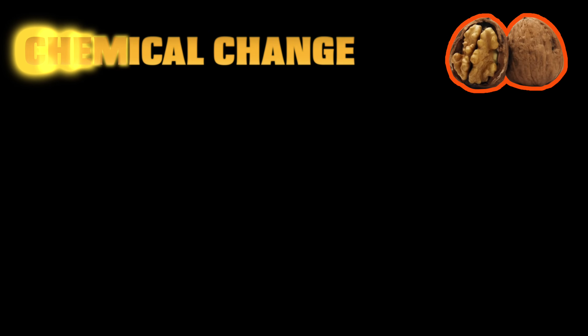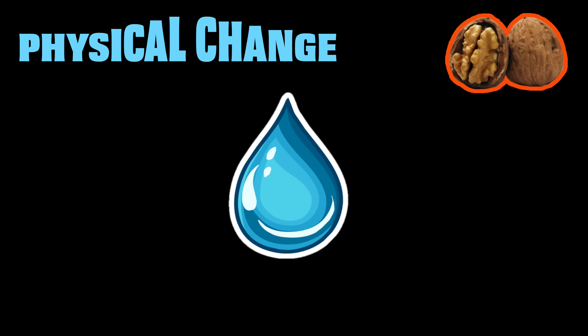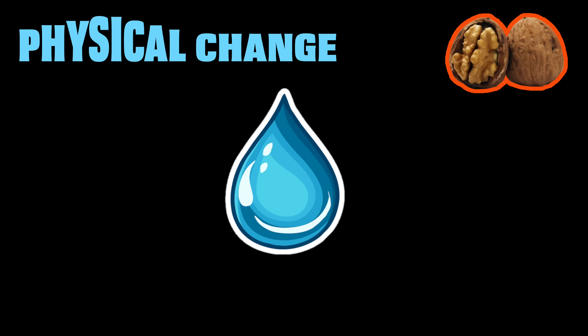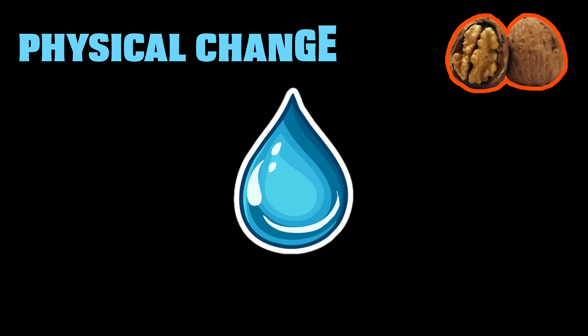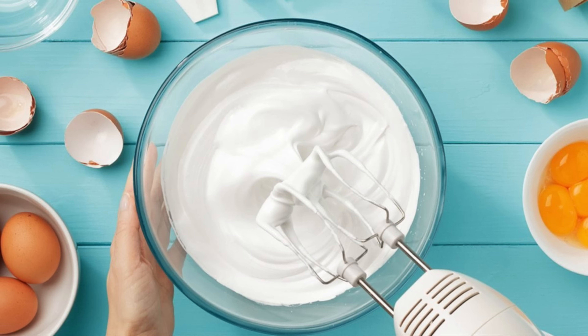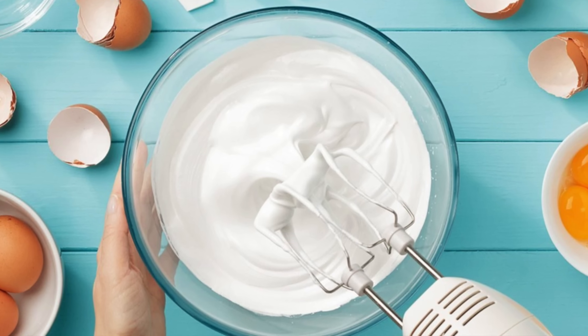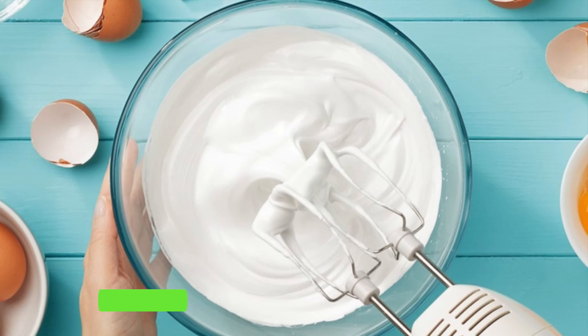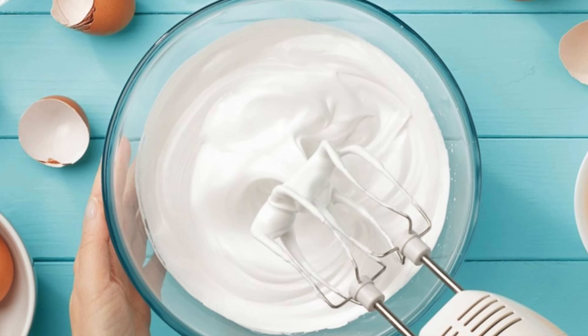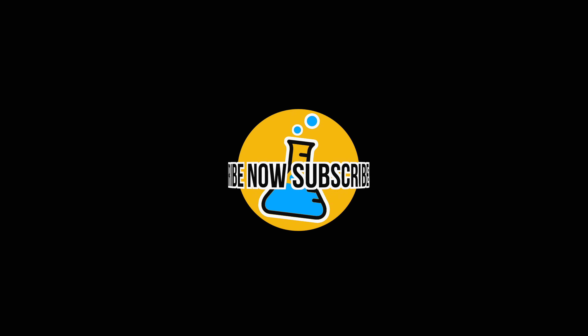In a nutshell, a chemical change produces a new substance while a physical change does not. A material may change shapes or forms while undergoing a physical change. However, if no chemical reactions occur and no new compounds are being produced, it is a physical change. Finally, coming back to whipping egg whites — is it a chemical change or a physical change? Yes, this is an example of a physical change because its composition did not change. That's it for today. Thank you for watching!